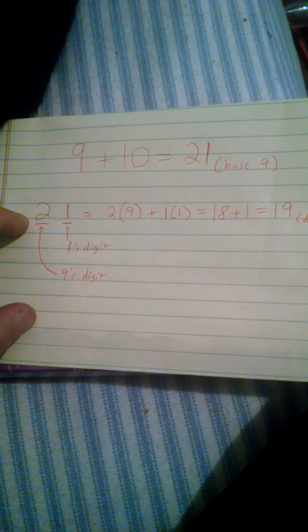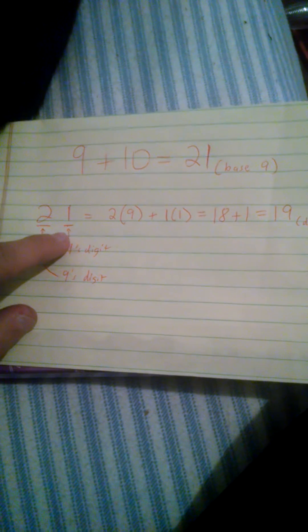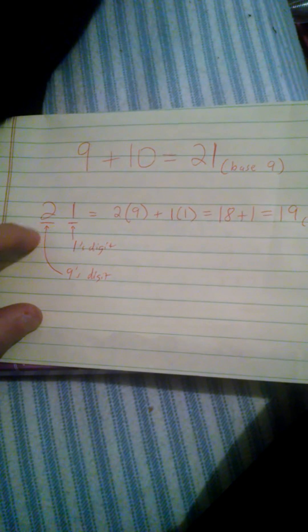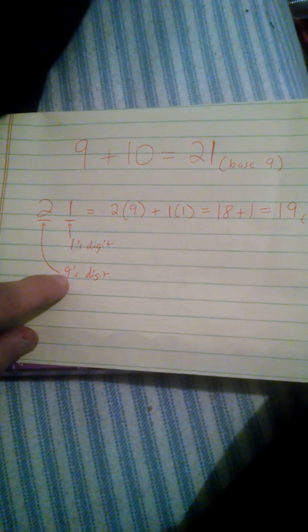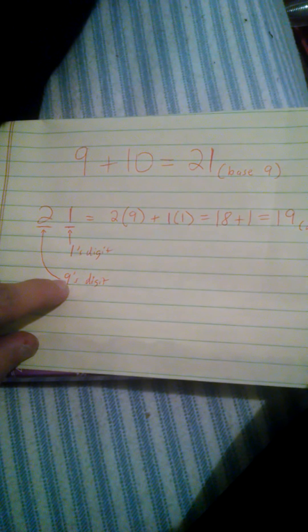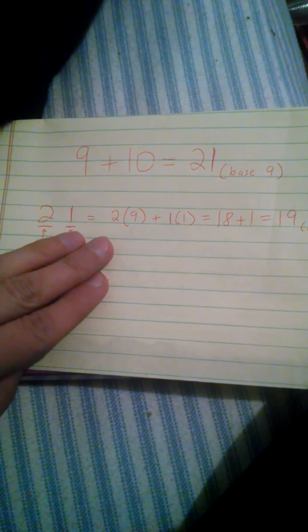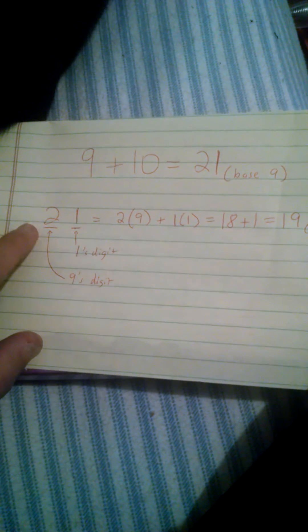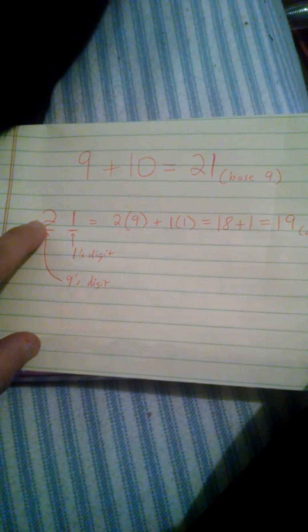But in the case of base 9, the first digit is ones, which is the case in any base. But the second digit, instead of being the tens digit, is the nines digit. So what I do, just like if I were to pretend this is 21 in decimal, I would say 2 times 10, because it's in the tens place, plus 1 times 1 gives me 21.